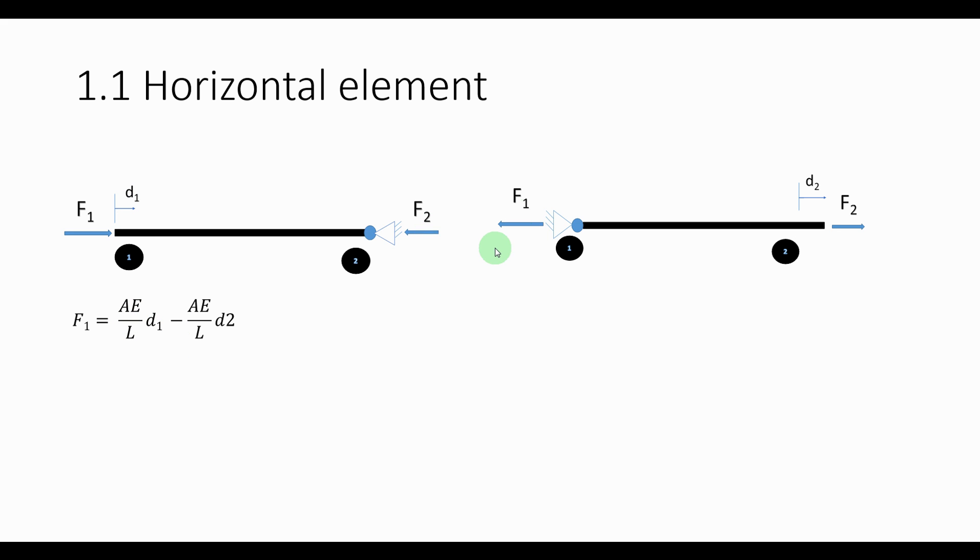And for the other figure, F1 is in the opposite direction of the displacement, that's where the negative comes from and also AE over L times the D2 displacement.